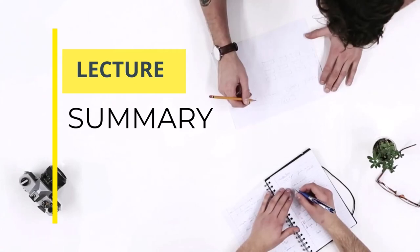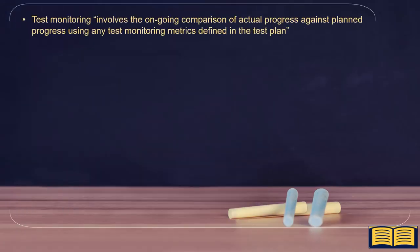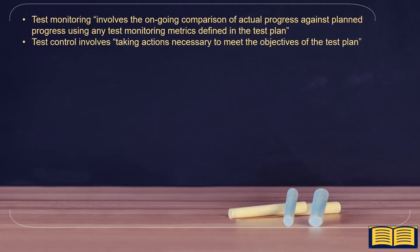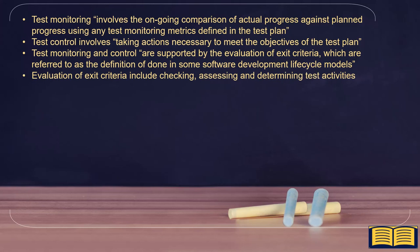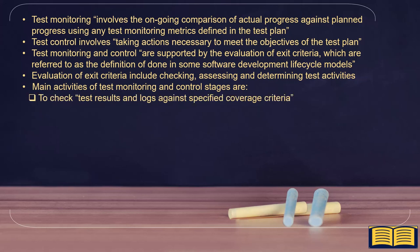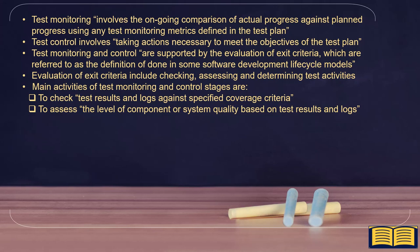Now let's summarize all the points we covered. Test monitoring involves the ongoing comparison of actual progress against planned progress using any test monitoring metrics defined in the test plan. Test control involves taking actions necessary to meet the objectives of the test plan. Test monitoring and control are supported by the evaluation of exit criteria, which are referred to as the definition of done in some software development lifecycle models. Evaluation of exit criteria includes checking, assessing, and determining test activities. Main activities include: checking test results and logs against specified coverage criteria, and assessing the level of component or system quality based on test results and logs, and determining if more tests are needed to gain confidence.